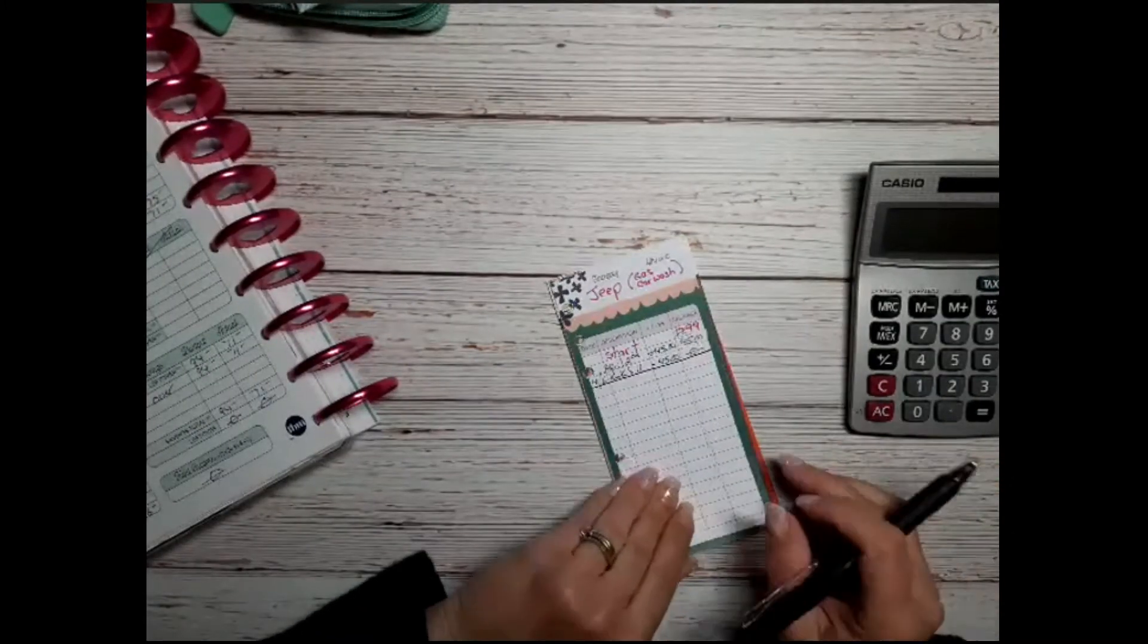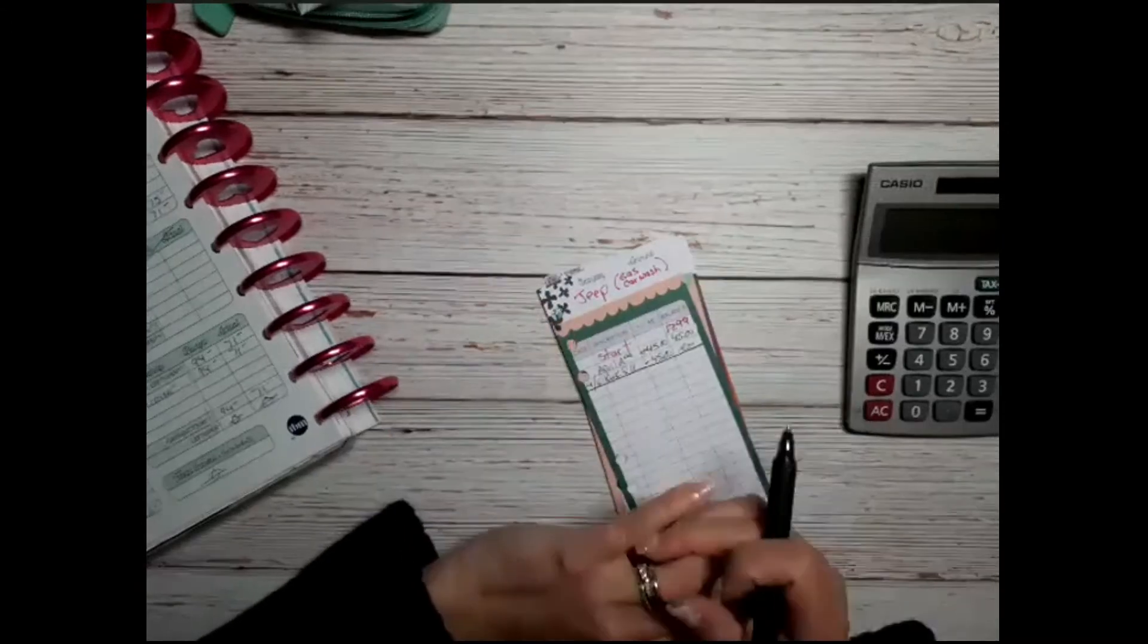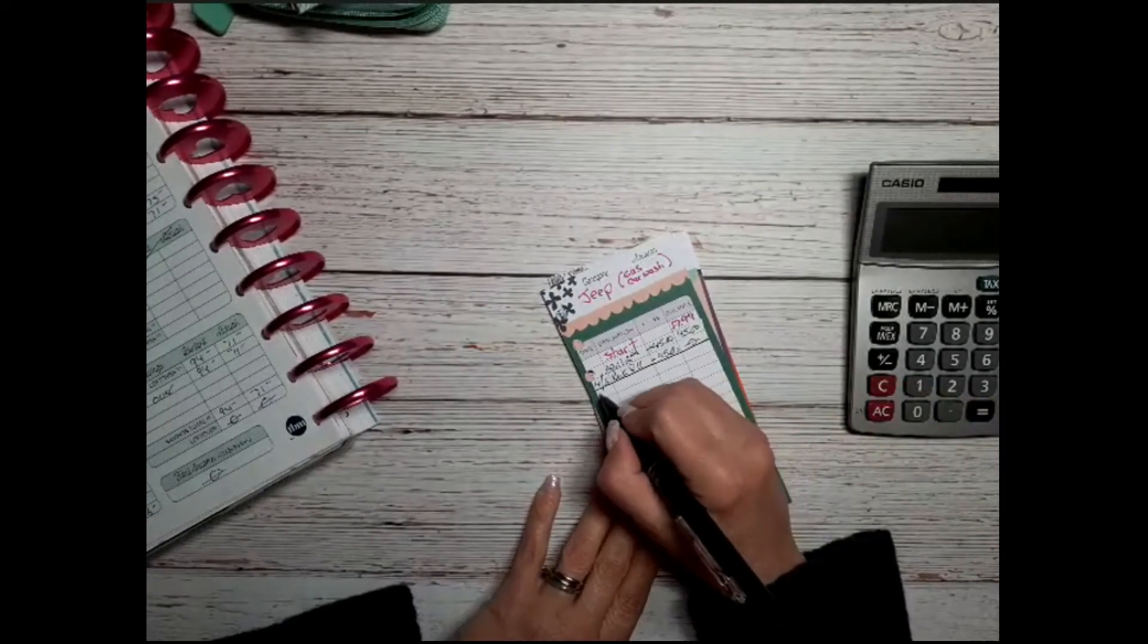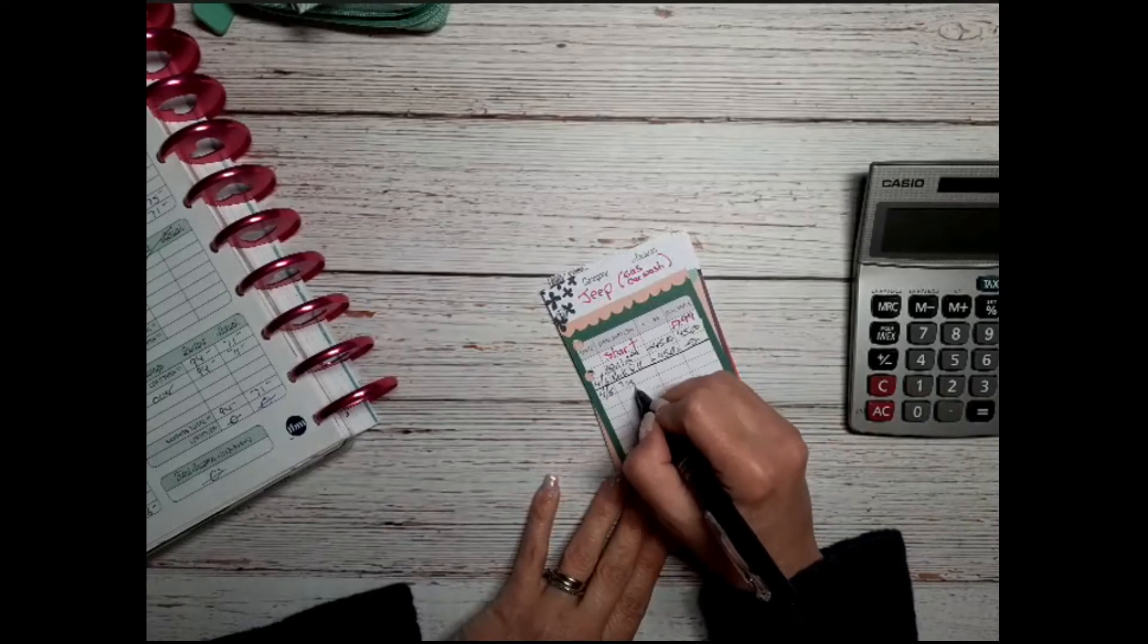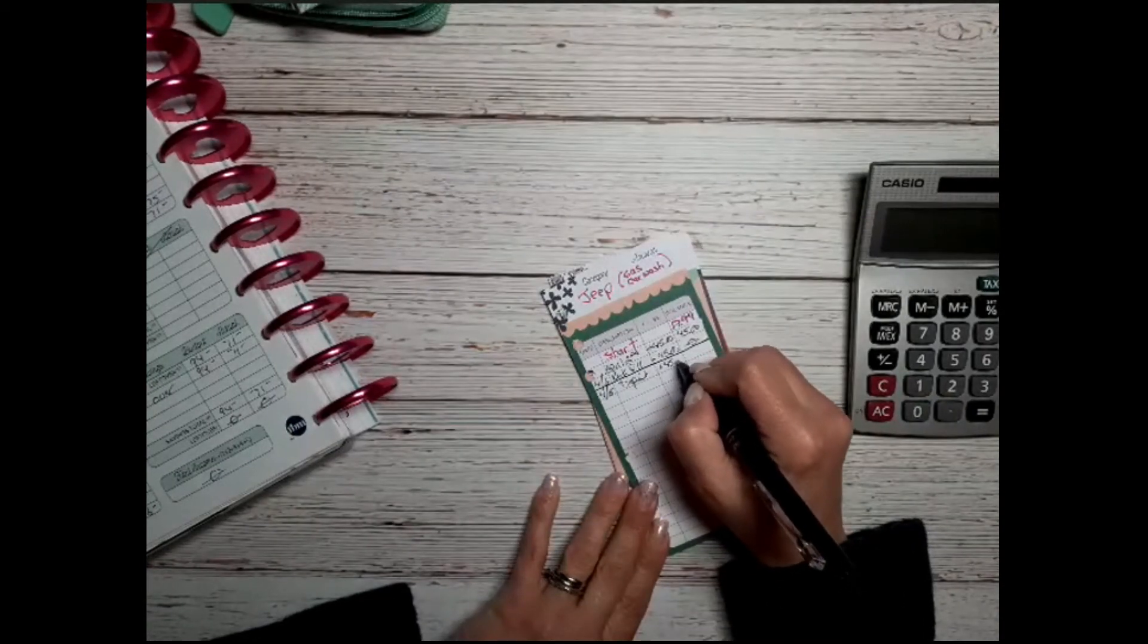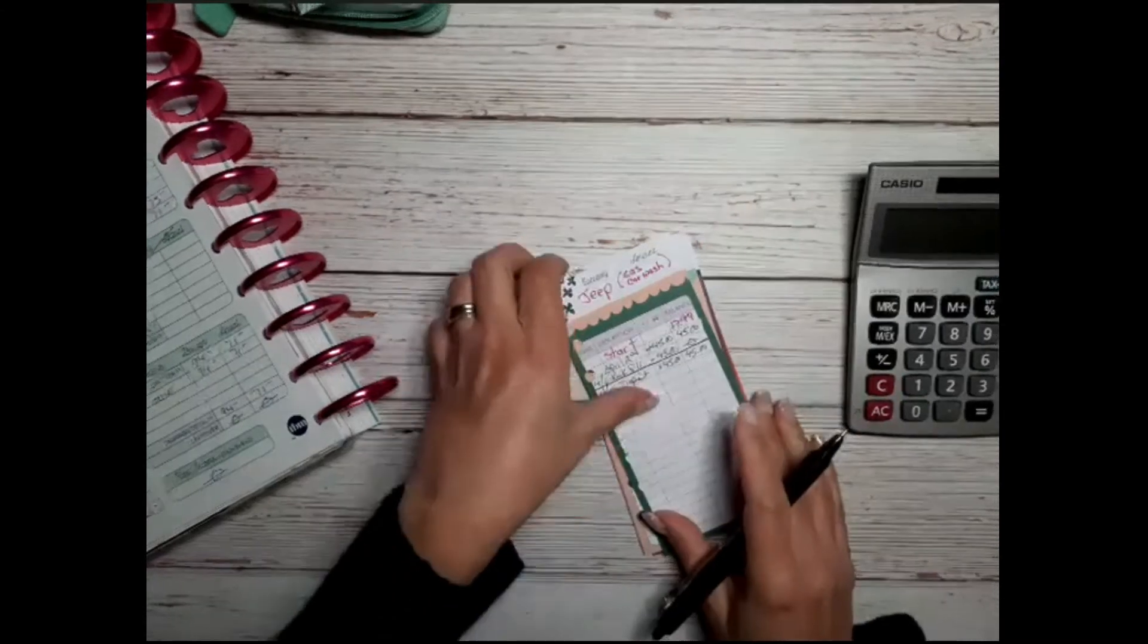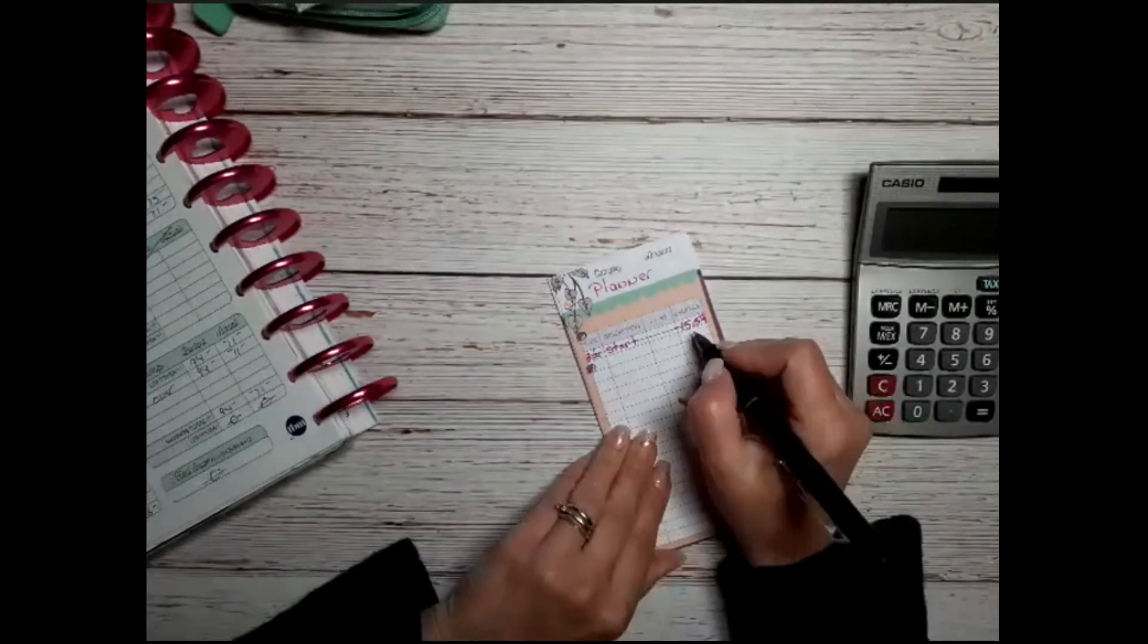So I use my debit card to get gas in my Jeep and just do it at the pump. So for April 15th we're depositing $45, so that gives us $45 to put gas in the car. Planner, we're not doing anything.